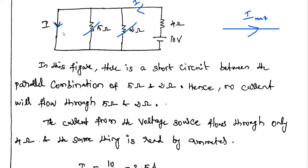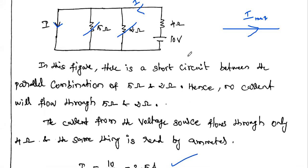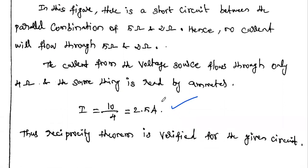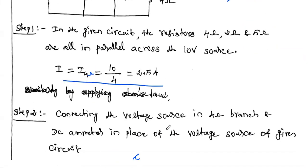Full current is flowing through the short circuit. That's why the current from the voltage source flows through only the 4 ohm resistor. Removing those two branches, only the battery and 4 ohm resistor are available in the circuit. So the current flowing through this 4 ohm resistor is 10 volt divided by 4 ohm — which is 10 divided by 4, equal to 2.5 amps. So by interchanging the voltage source and excitation, we get the same current I.